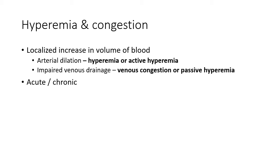Hyperemia and congestion are both similar disorders — both are localized increases in volume of blood. The difference comes in the cause. In hyperemia, otherwise called active hyperemia, the localized increase in volume of blood is due to arteriolar or arterial dilation. Whereas in venous congestion, otherwise called passive hyperemia, the increase in volume of blood is due to impaired venous drainage.